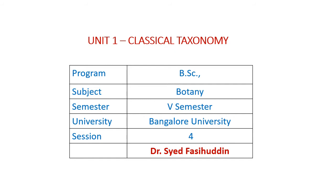In the previous session, we studied and discussed the Engler and Prantl system of plant classification, wherein we studied the salient features of the system, the outline of the system, as well as the primitive and advanced characters considered by Engler and Prantl.